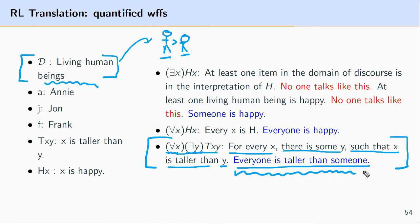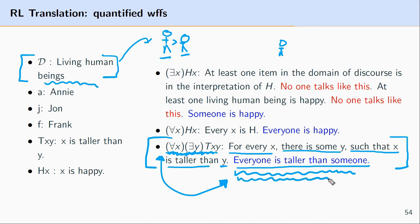This might sound strange — we might ask, what about the shortest person? But the point is not to translate only true expressions. Our goal is to translate predicate logic formulas into English, which then gives us the tools to translate back the other way. I'll cover overlapping quantifiers in more detail in a later video.